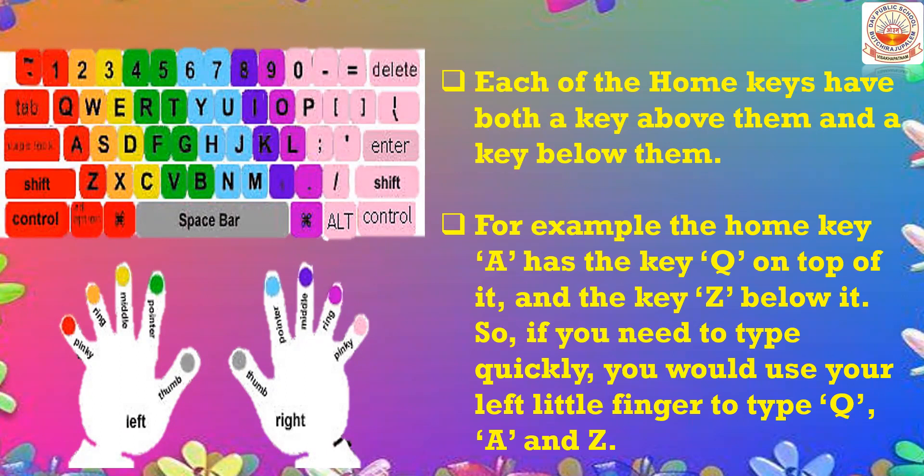On the right side: for the semicolon key, P is above and slash is below — use the right pinky finger to type P, semicolon, and slash. For L, O is above and full stop is below — use the right ring finger to type O, L, and full stop. To type U, J, and M, use the right pointer finger.